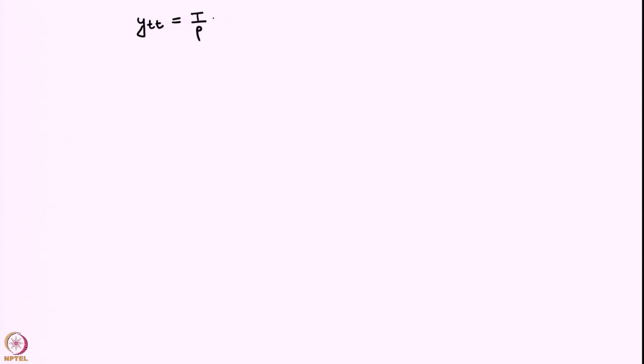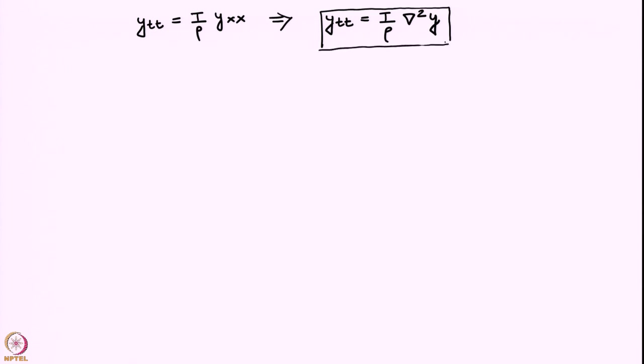The linear wave equation is y_tt = (T/ρ)·y_xx. In the more general case with more than one spatial dimension, this generalizes to y_tt = (T/ρ)·∇²y, where ∇² is the scalar Laplacian with ∂²/∂x² and ∂²/∂y² terms. We will come to one such example shortly. We have gone from a finite number of degrees of freedom to an infinite number, i.e., a continuous system, so our governing equation has become a partial differential equation.